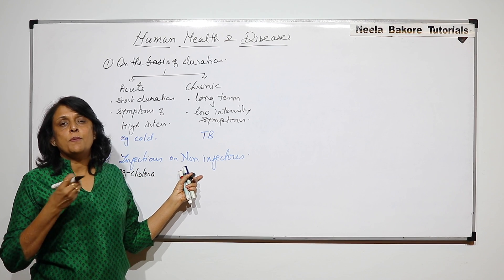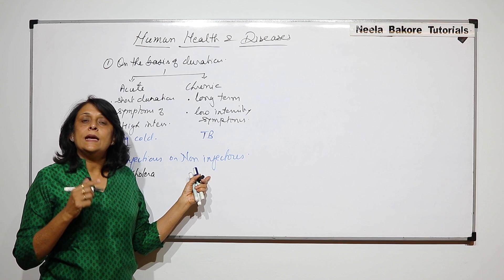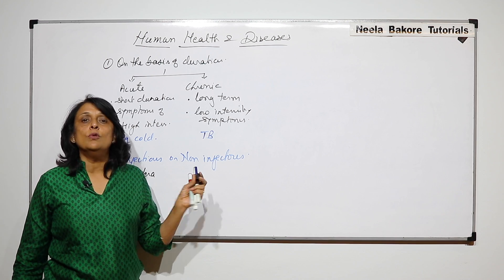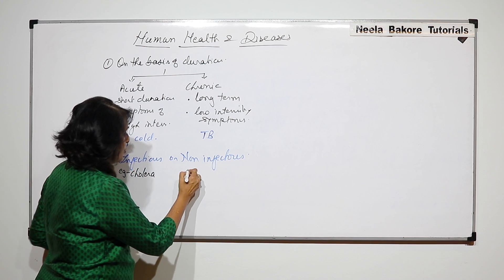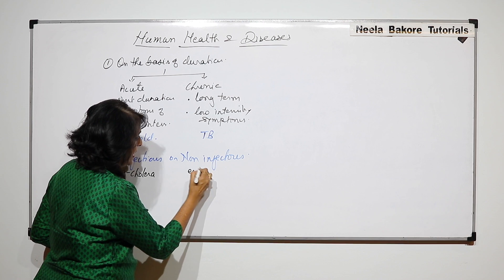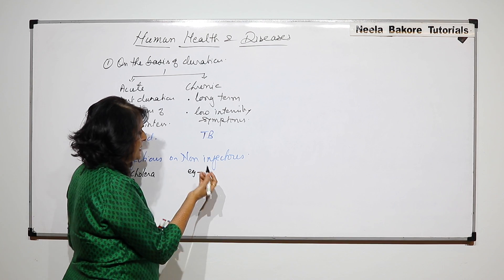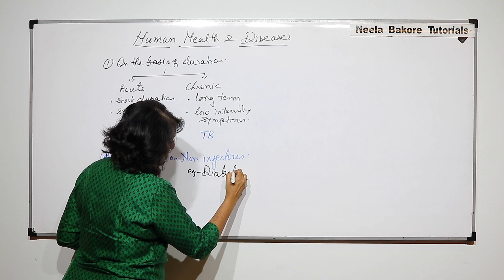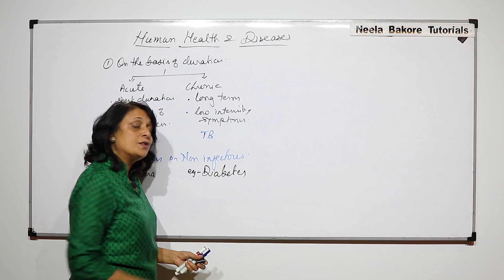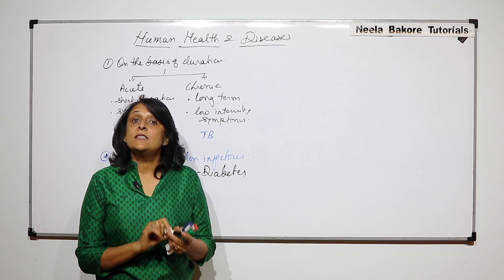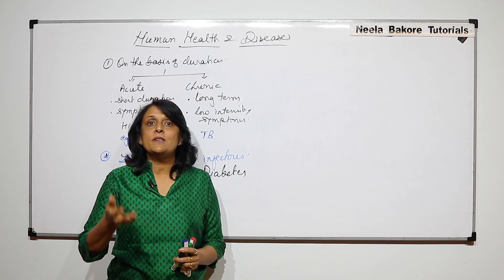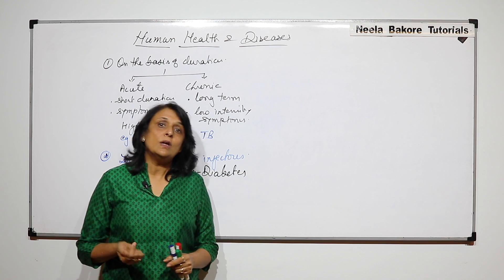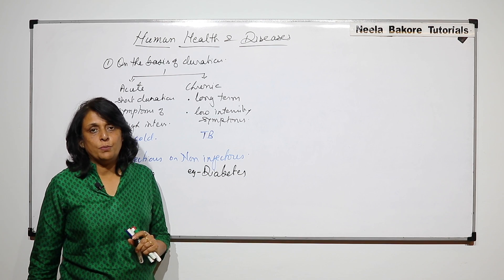Non-infectious means if a person has that disease, it is not going to be transmitted to a healthy person. A good example is diabetes — if a person has diabetes, this disease is not going to be transmitted from the diabetic person to a normal, non-diabetic person.